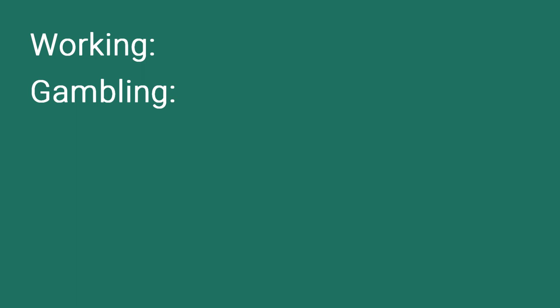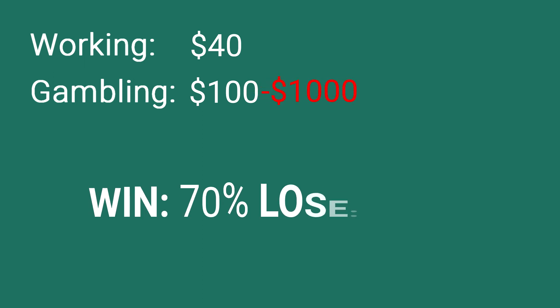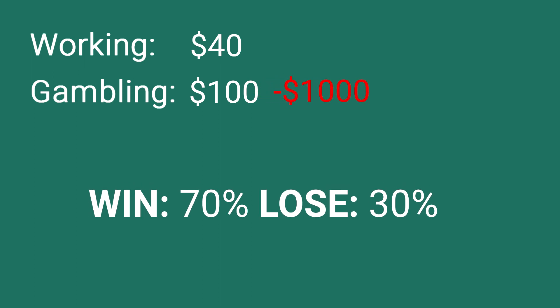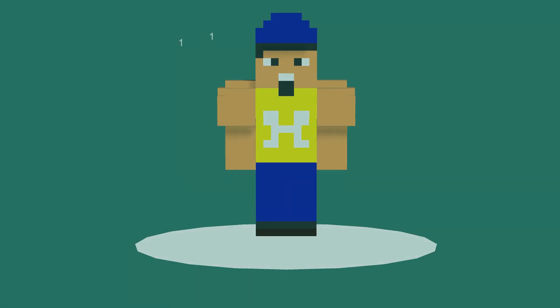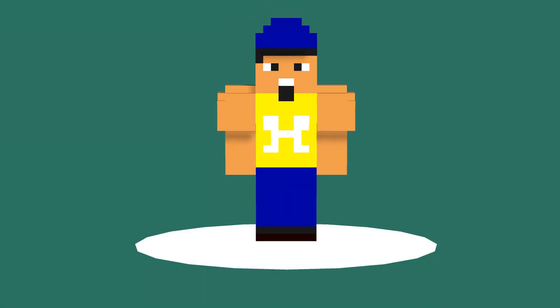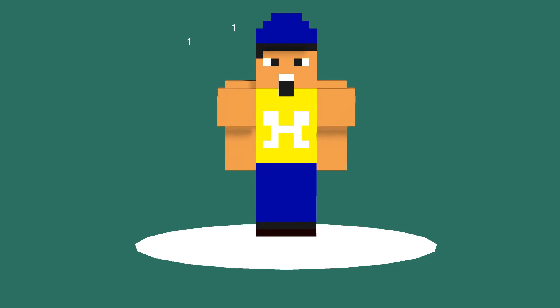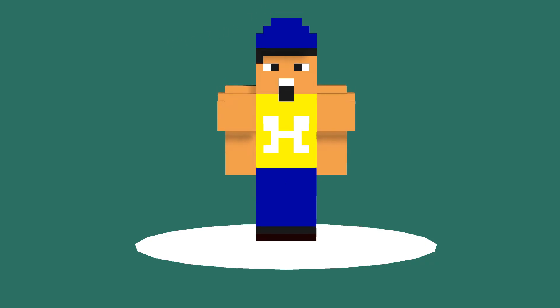If he chooses to work, then Tim earns $40 which is added to his savings. If he chooses to gamble, then Tim earns a whopping $100 if he wins. If he loses though, Tim has to pay $1,000 back. His chances of winning and losing are 70% and 30% respectively, and of course we are not going to explicitly tell Tim what he must choose. Instead we are going to let him learn by himself using machine learning what choices are better in order to save more money each year.